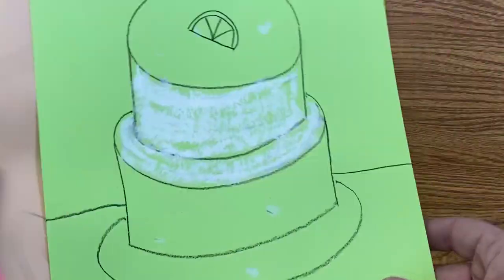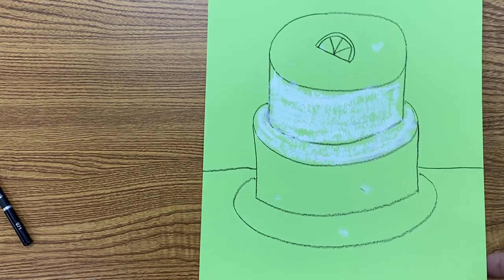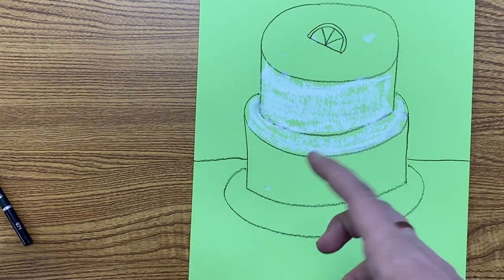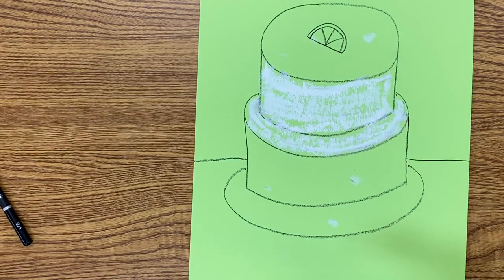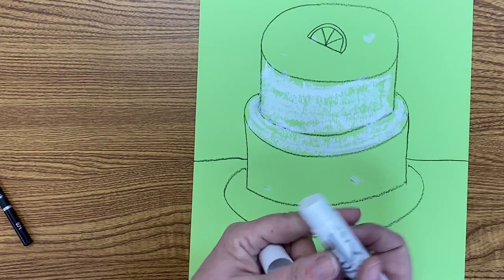Once you have redrawn your picture over from the drawing you had made, you're going to be given a white stick of paint. This is called tempera paint sticks.